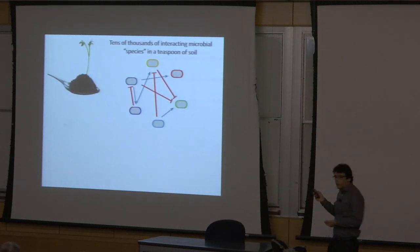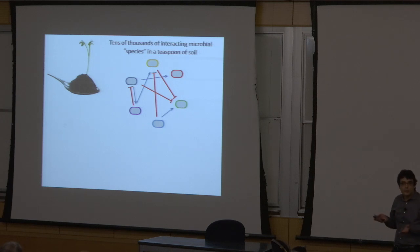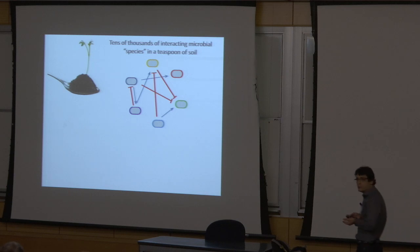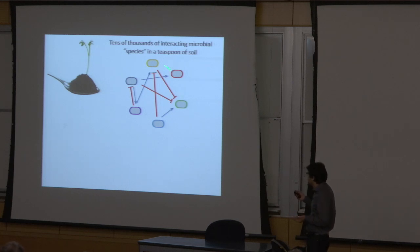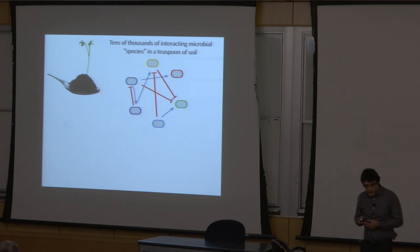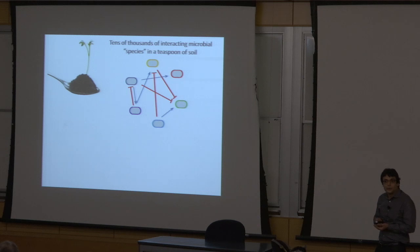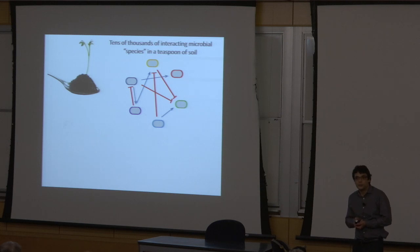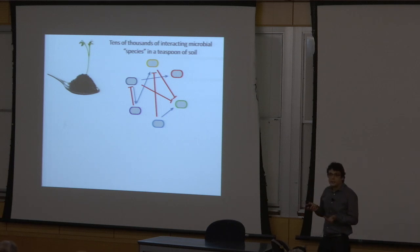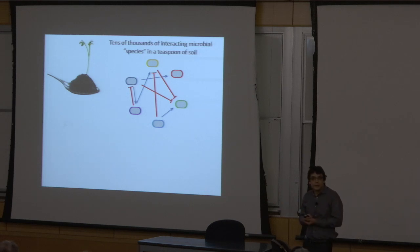Most microbial communities are extremely diverse. If you take a single teaspoon of soil, you might find 10,000 different species — not 10,000 individuals, there will be billions upon billions of bacteria, but 10,000 different bacteria with complicated interactions between them. This diversity is a bit puzzling from an evolutionary perspective because if these bacteria compete with each other, we might expect a single best bacterium to outcompete all the others — that's the competitive exclusion principle, also known as survival of the fittest. Microbial ecologists have long struggled to explain the generation and maintenance of extremely diverse communities.